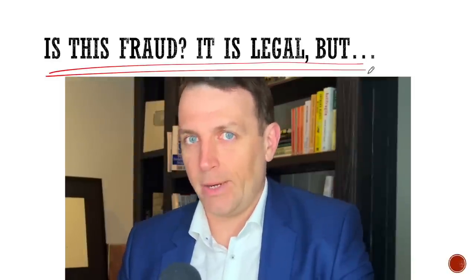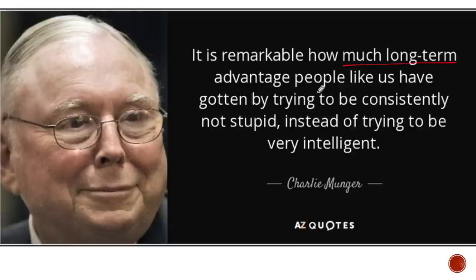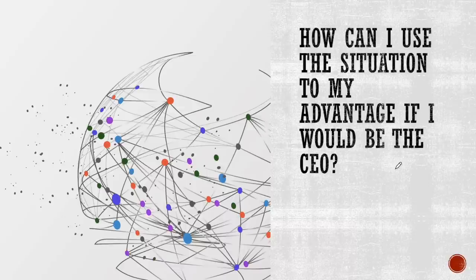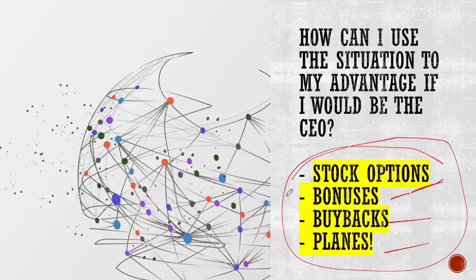Rule number four: as Munger says, invert, always invert. It's remarkable how much long-term advantage people have gotten by trying to be consistently not stupid. In line with rule number one — don't deal with the devil. Instead, ask yourself: how can I use the situation to my advantage? If I were the CEO in a position to commit fraud, what would I do — stock options, bonuses, buybacks, planes, bonds? Always ask that question and check how much of what they're doing feels good or when it's too much.